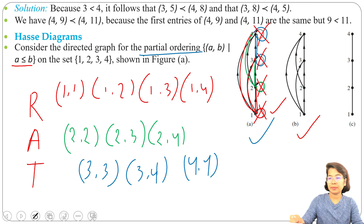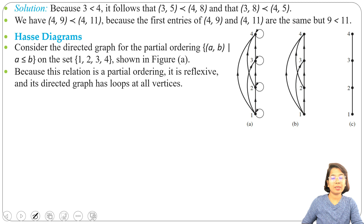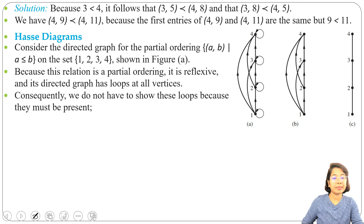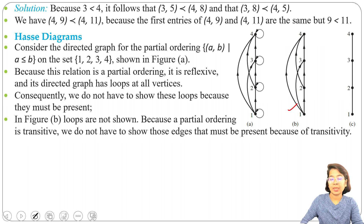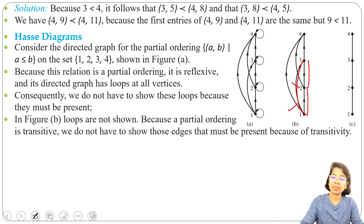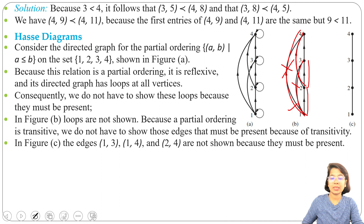Figure B is without self-loops. Because this relation is a partial order it is reflexive, so the directed graph has loops on all vertices — we don't need to show them. After removal of the loops we get figure B. Since it is also transitive: 1 is related to 2, 2 is related to 3, so 1 must be related to 3. Similarly, 2 is related to 3, 3 is related to 4, so 2 must be related to 4. These transitive edges are obvious, so we can remove them — remove edges 1→3, 2→4, and 1→4.